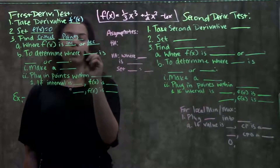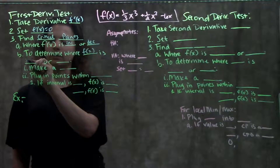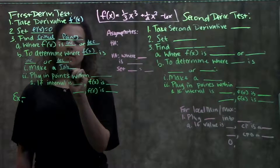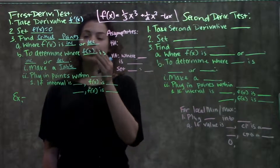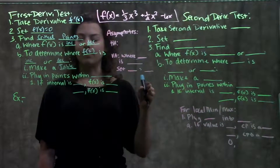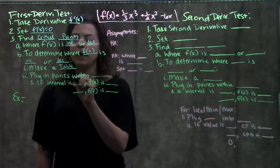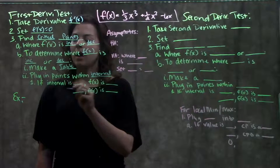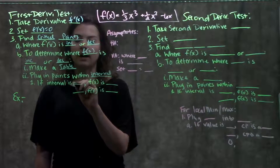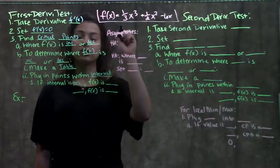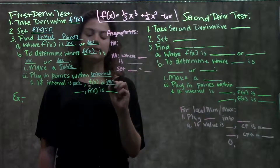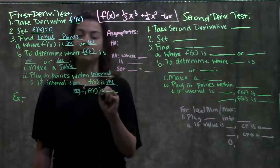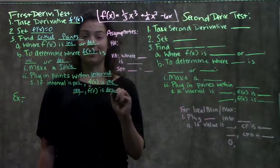To determine where f of x is increasing or decreasing, we make a table or a number line. We put the critical points we just solved for on our number line, and then we plug in points within each interval. If the interval is positive, that means our original function f of x is increasing. And if our interval is negative, that means our original function is decreasing.